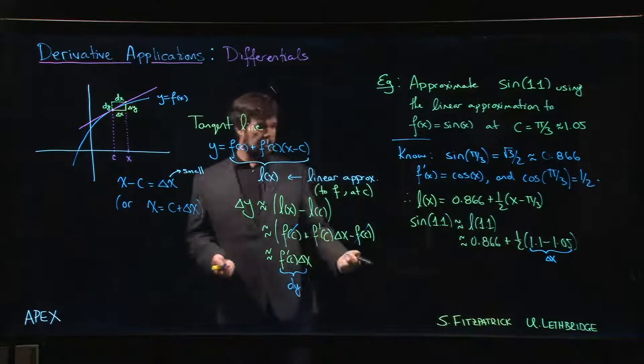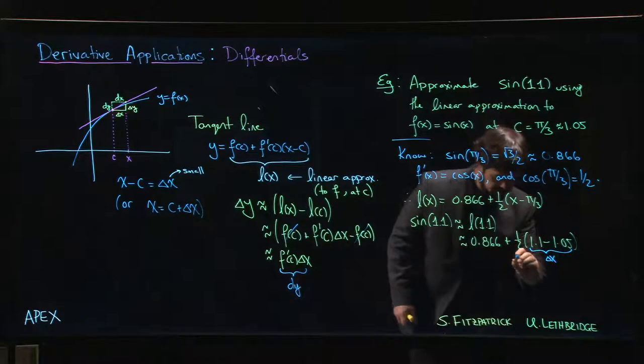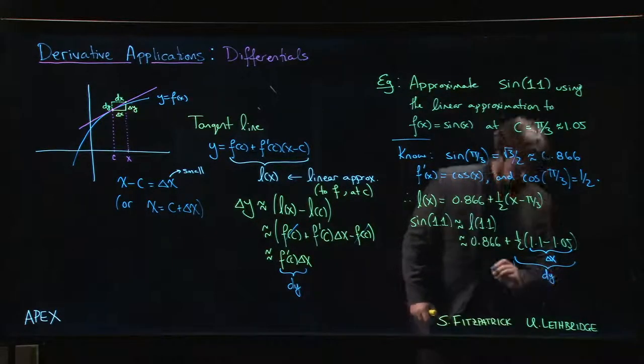When we multiply by f prime, putting that one-half out front, that's our f prime. This whole thing is our differential, our dy.